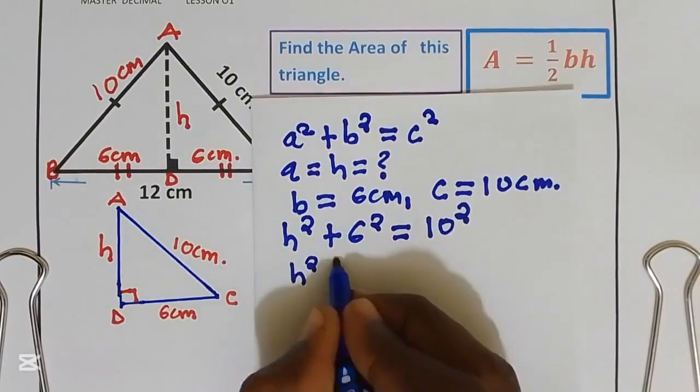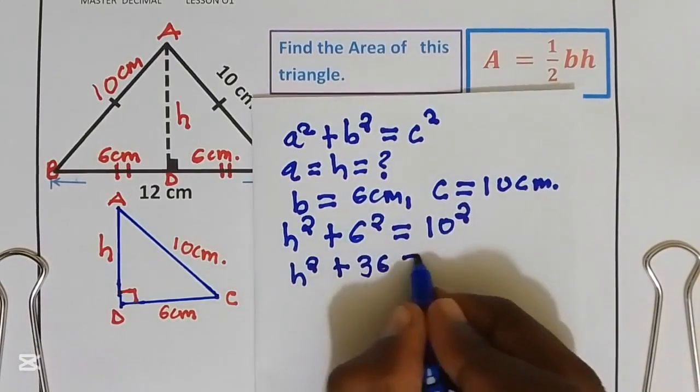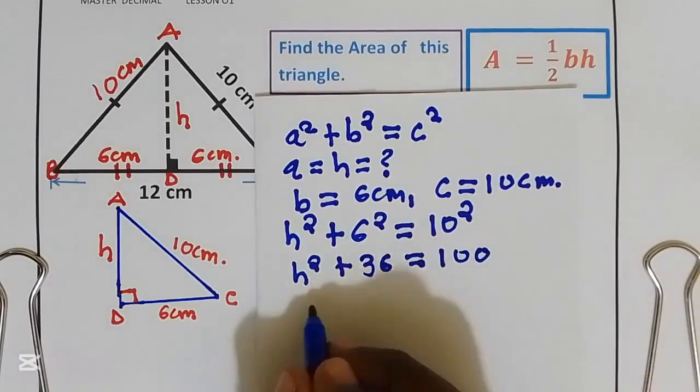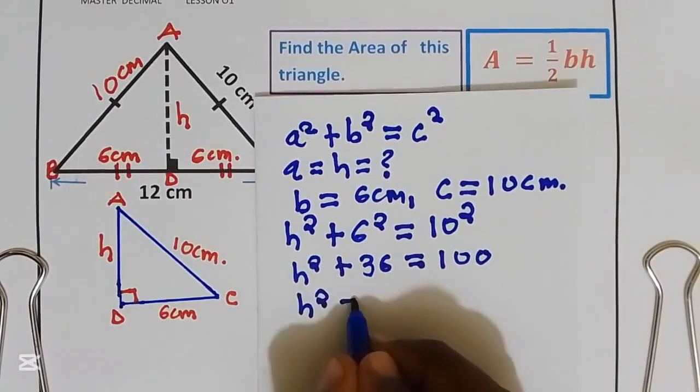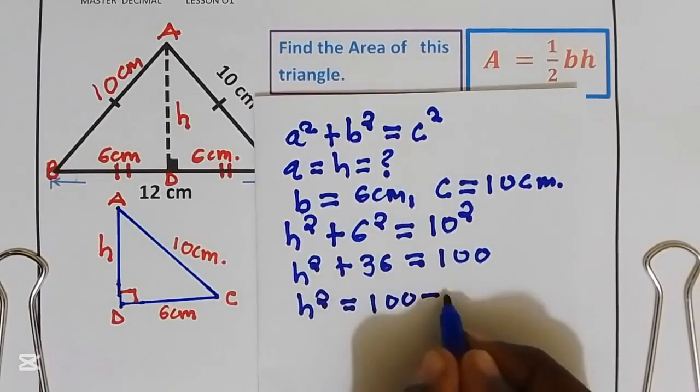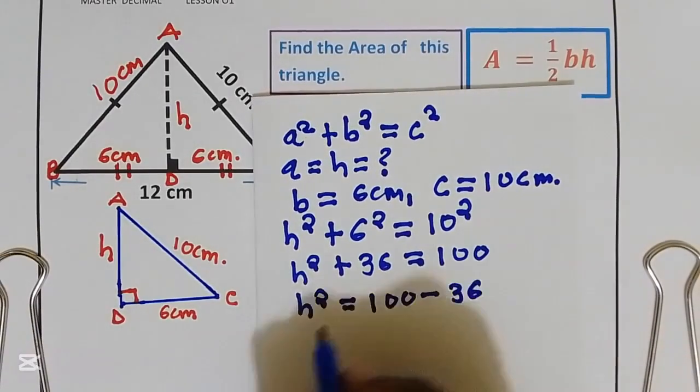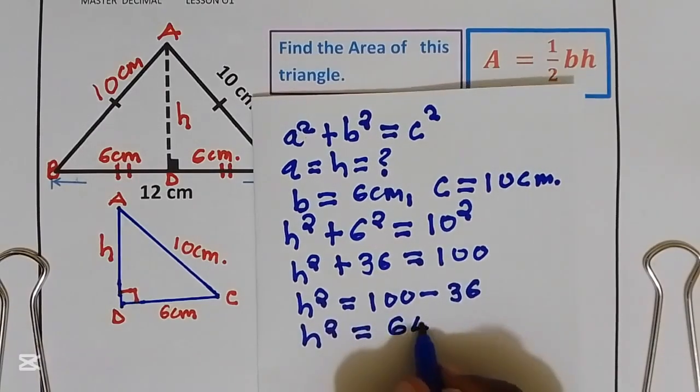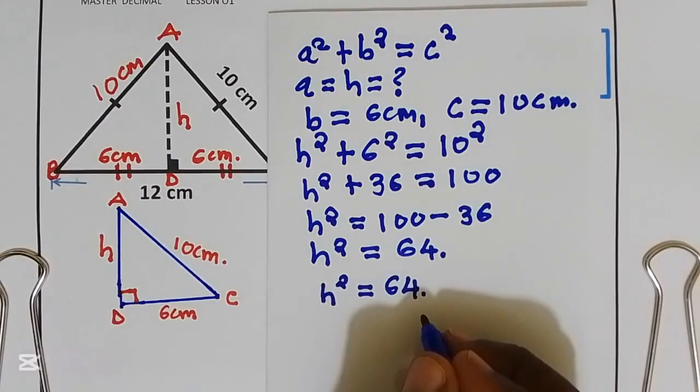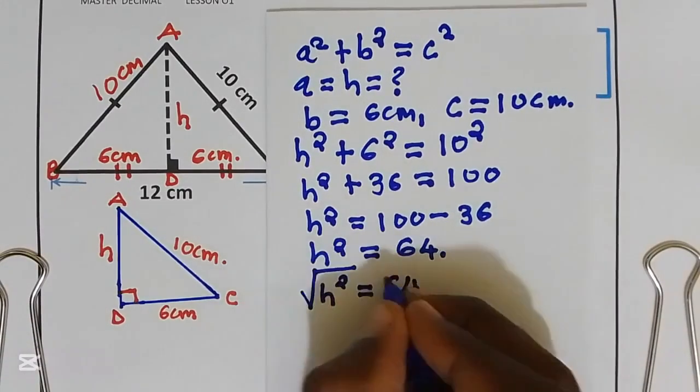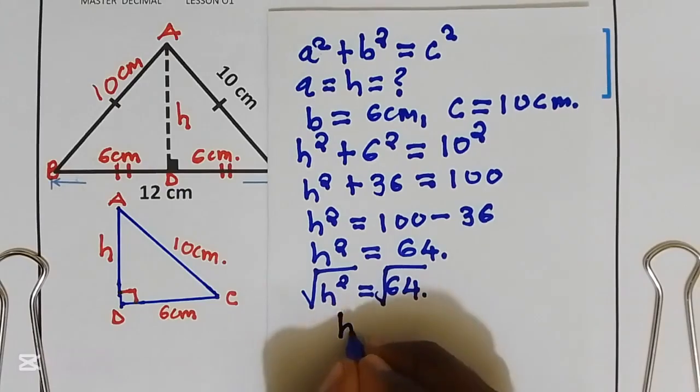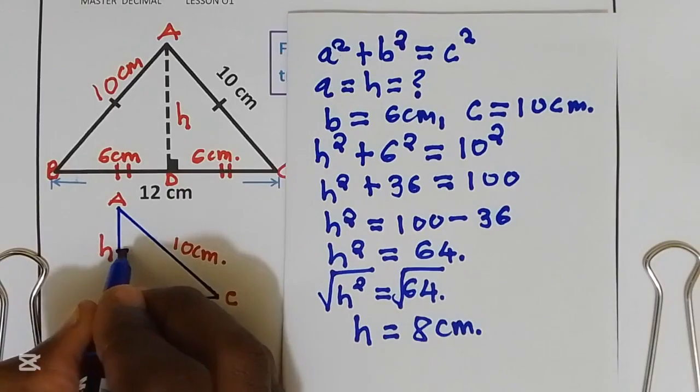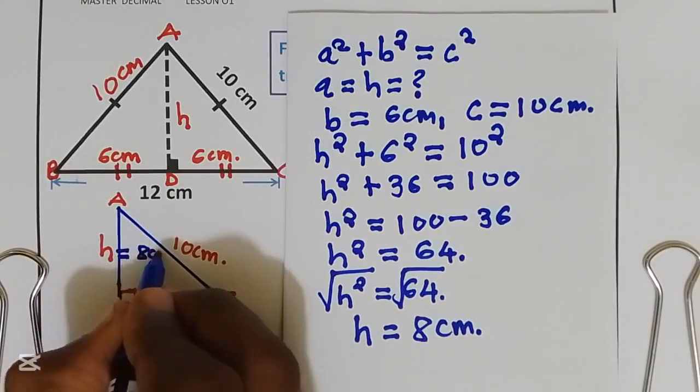h² + 36 = 100. Take 36 to the right side. h² = 100 - 36. Now h² = 64. Take square root of both sides. We get h = 8 centimeters.